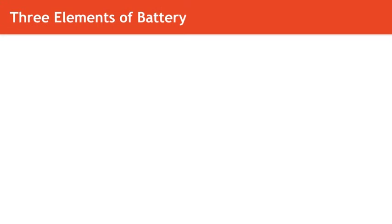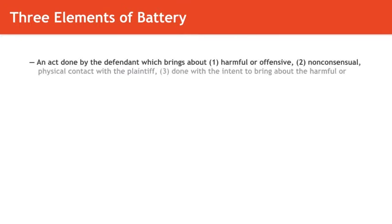Battery. The basic elements of a prima facie case for battery are: you need an act done by the defendant which brings about harmful or offensive non-consensual physical contact with the plaintiff, and the act must be done with the intent to bring about the harmful or offensive contact.